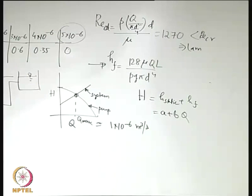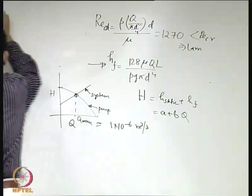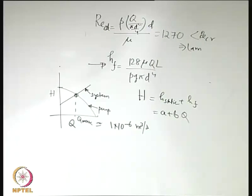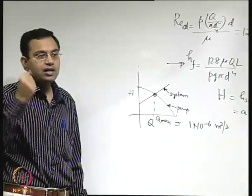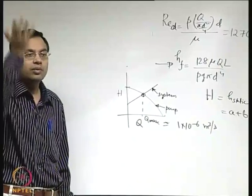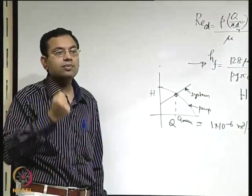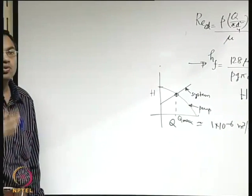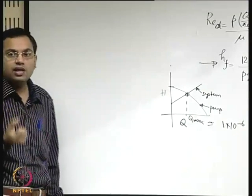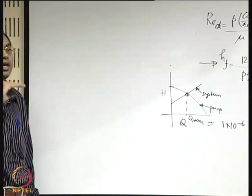Now that we have looked into the characteristics of pumps, we will look into the characteristics of turbines. The difference is very obvious: a pump takes input power and transmits it to the fluid, whereas a turbine extracts power from the water and converts it into useful work. So in terms of energy transfer, the turbine is just the reverse of the pump.